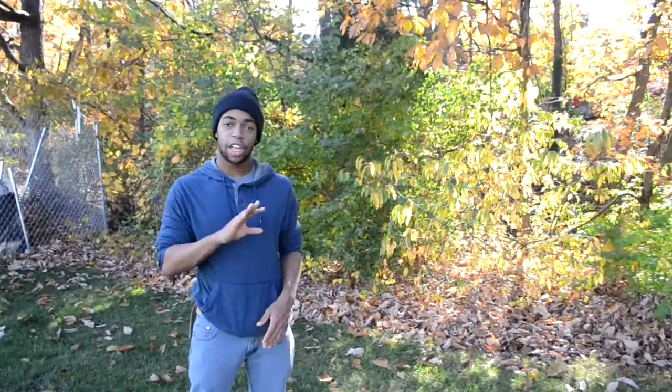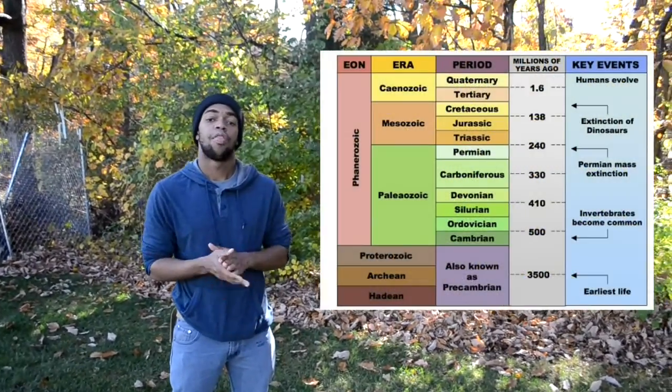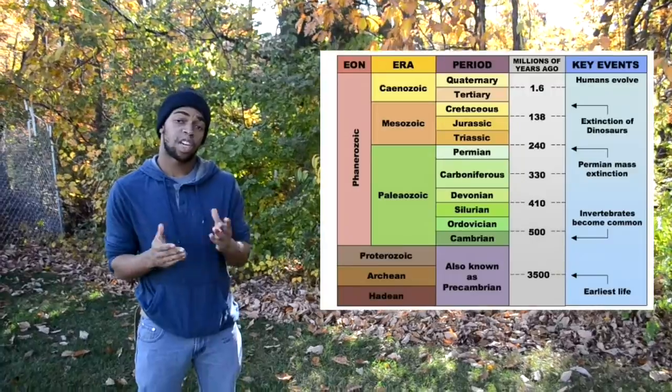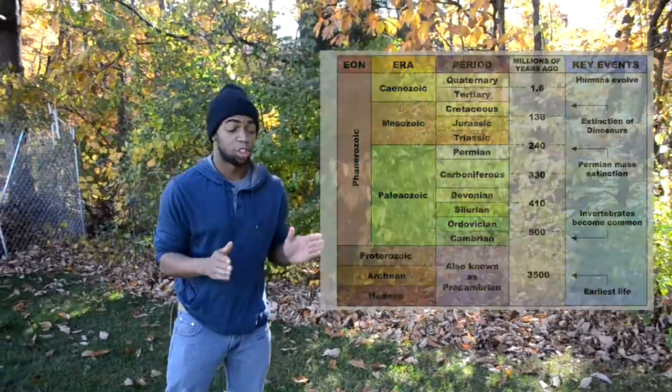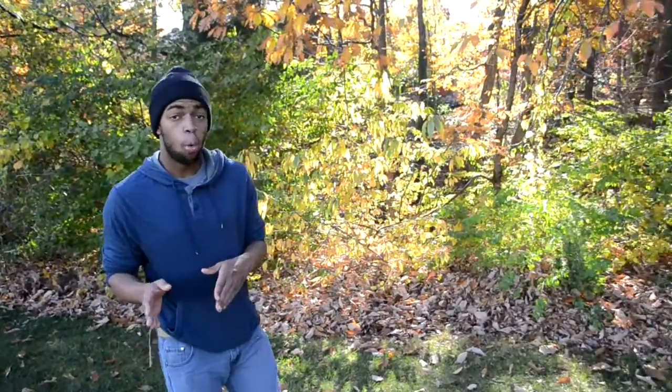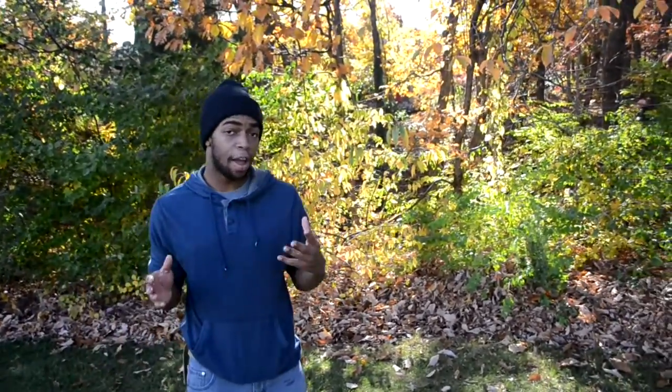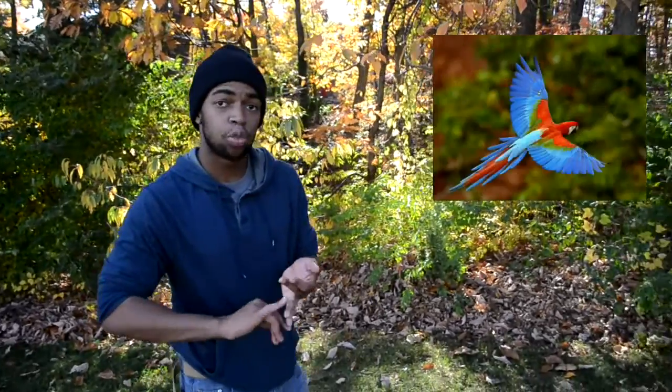The geological time frame starts with the Cenozoic era, which is divided into the Quaternary period, marking the arrival of civilization of mammals, and then the Tertiary period, which marks the diversification of life, such as the arrival of birds, whales, elephants, horses, different flowering plants, and primates.